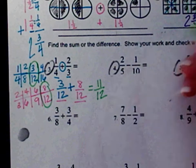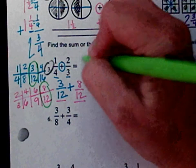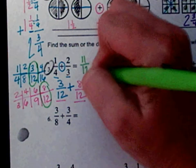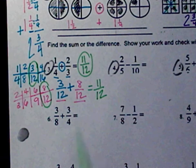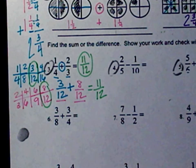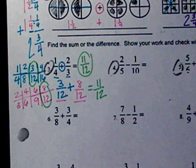Now I can add them. Three plus eight is eleven; the denominator stays the same. My answer is eleven-twelfths. Notice on this one I didn't stack them — I put them side by side. That is your choice; you can do it side by side or stacked, however you read them better.